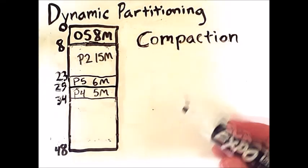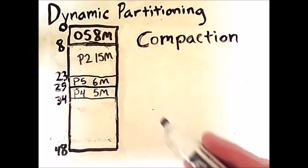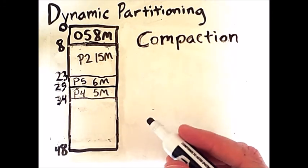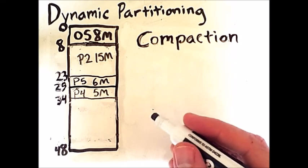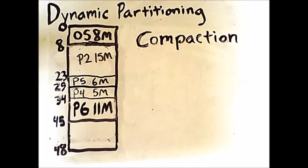So, this is what memory looks like after compaction. Now, there is plenty of room in memory to service process 6's request for 11 megabytes. Although compaction solves our problem, it should be noted that compaction is computationally expensive and best avoided if possible. Compaction is less likely to be needed if we have an effective placement algorithm.